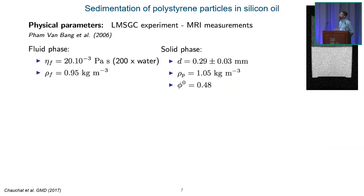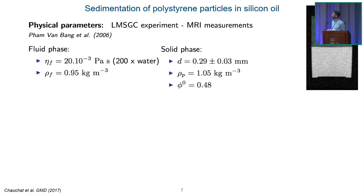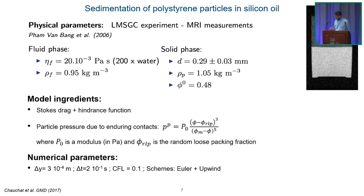The first test case is a pure sedimentation problem. We take an initial sample of spheres — here polystyrene beads — stir them in a very viscous fluid (silicone oil, 200 times the viscosity of water), and at 48% initial concentration, with packed concentration about 60%. We want to replicate an experiment using an NMR system to measure concentration profiles. The model ingredients are Stokes drag plus hindrance function, and the Johnson-Jackson model for particle pressure: a bulk modulus times a function of phi. Phi_RLP is random loose packing, around 57% for spheres — the concentration above which a contact network and normal stresses develop.